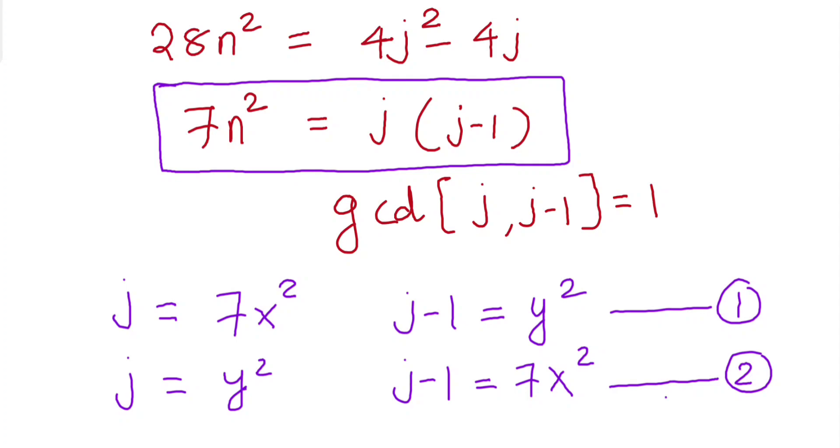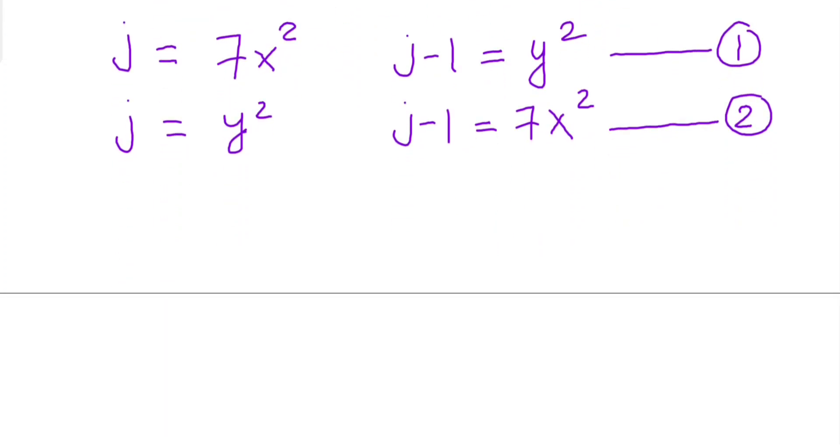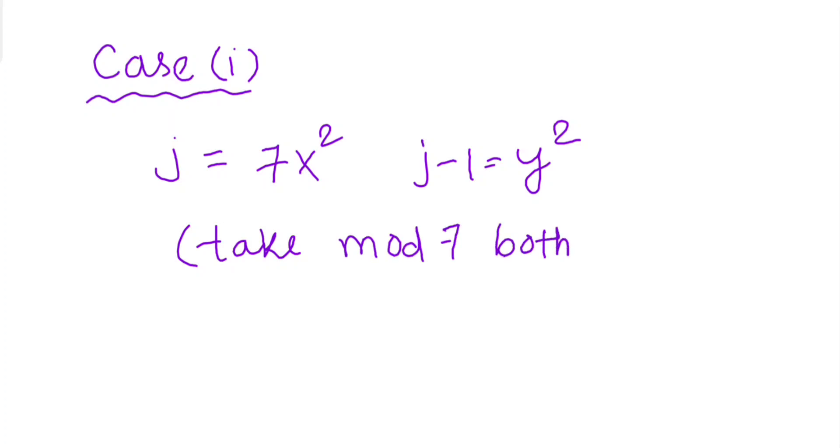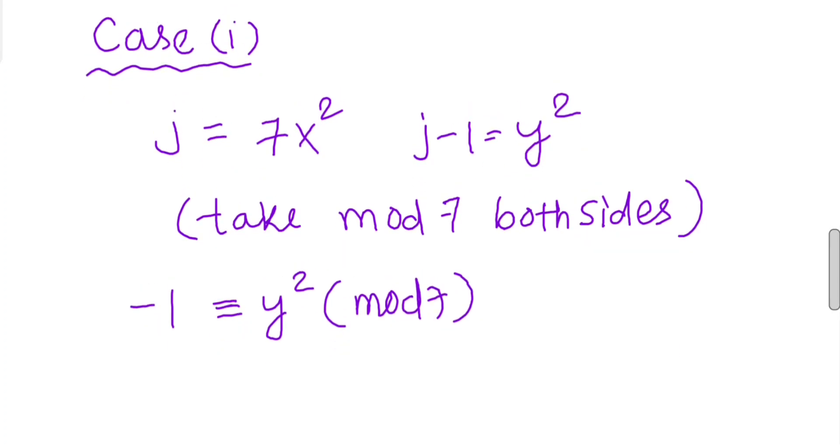If we see case 1, j = 7x² and j - 1 = y² for some x and y. By simplifying this, take mod 7 both sides and we have if you simplify you get -1 ≡ y² (mod 7) which is obviously not possible. This is impossible.